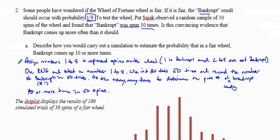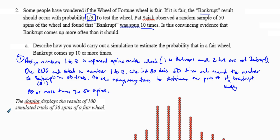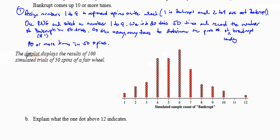So to recap: we assign numbers 1 to 9 to represent spins on the wheel — 1 is bankrupt, 2 to 9 are not bankrupt. Using a random number generator, we do this 50 times and record the number of bankrupts. We repeat this many many times to determine the probability of landing on bankrupt 10 or more times in 50 spins. We're using the random number generator, recording results many times, and using those results to answer the question.